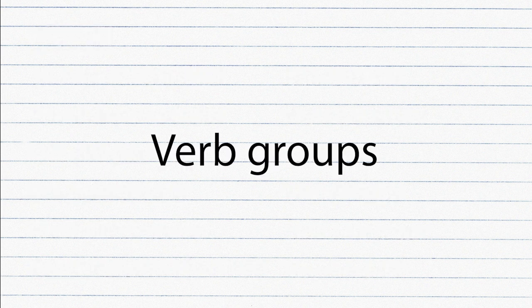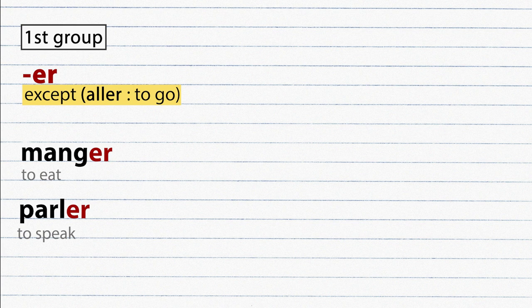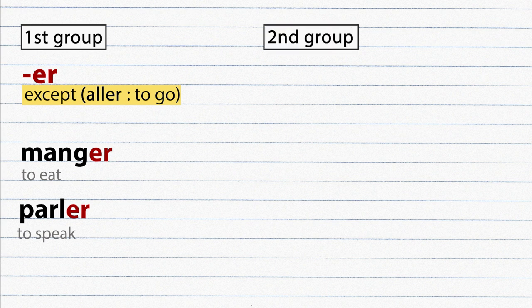Verb groups. There are three groups of verbs in French. First group, verbs whose infinitive ends with ER, except the verb aller. Example: manger, parler. Majority of the verbs in French belong to the first group. And if new verbs are added to the French language in the future, they will directly be added to the first group.